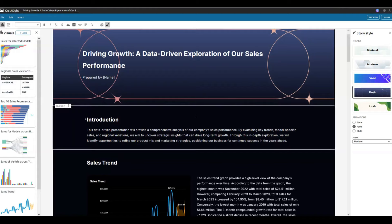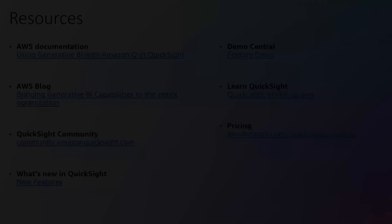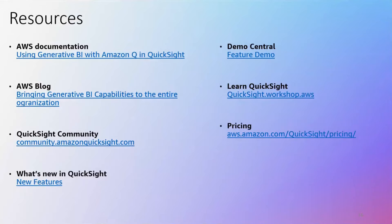As you have seen with Automotive Insights, the generative capabilities of Amazon Q in QuickSight help both analysts — by creating analyses quickly using Q — and business users — by uncovering and sharing key insights to aid data-driven decision making. These are the resources useful to further explore the capabilities we discussed today, including documentation on using generative BI with Amazon Q in QuickSight.